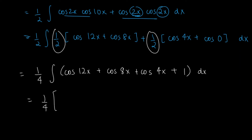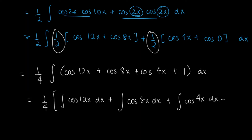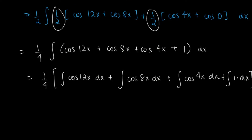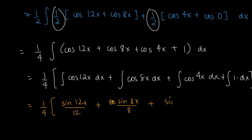This becomes one over 4 times the integral of cos(12x) plus the integral of cos(8x) plus the integral of cos(4x) plus the integral of 1, all with respect to x. Finally solving: one over 4 times [sin(12x)/12 + sin(8x)/8 + sin(4x)/4 + x] plus a constant. This is your final answer.